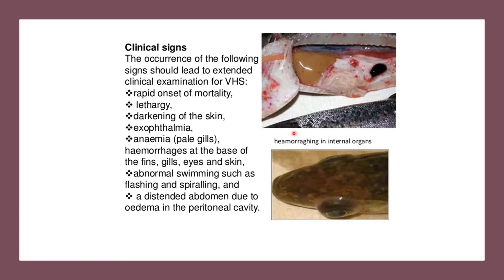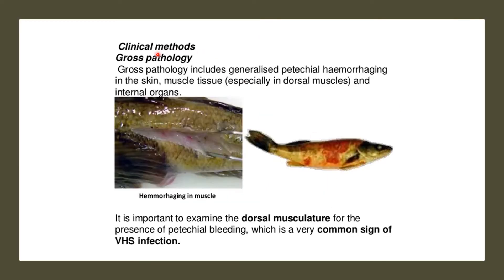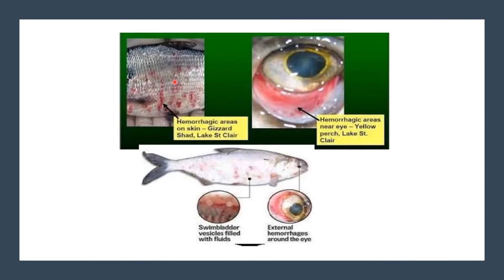This diagram shows hemorrhaging in the internal organs and exophthalmia. Gross pathology includes generalized petechial hemorrhaging in the skin and muscle tissue, particularly the dorsal muscles and internal organs. It is important to examine the dorsal musculature for petechial bleeding, a very common sign of VHS infection. We also see hemorrhagic areas on the skin of the gizzard shad, hemorrhagic areas near the eye, swim bladder vesicles filled with fluid, and external hemorrhages around the eyes.